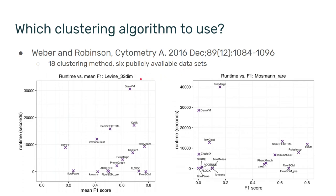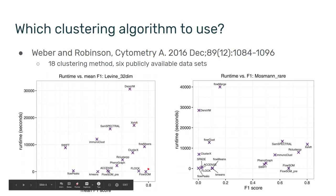Starting with the left figure, looking at Levine, you can see a pretty broad range of success across the different algorithms. However, one of these algorithms — Flowsome — seems to be to the bottom right, which means it has the highest accuracy and runs really, really fast. Remember, the y-axis is seconds, so Flowsome runs in just a few minutes. So at least for this dataset, Flowsome seems to be the winner.